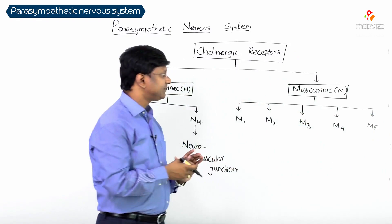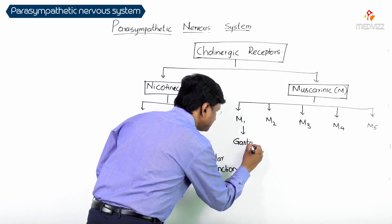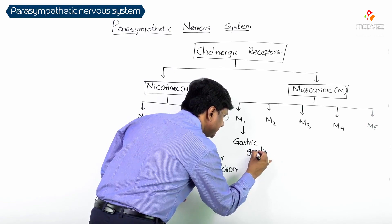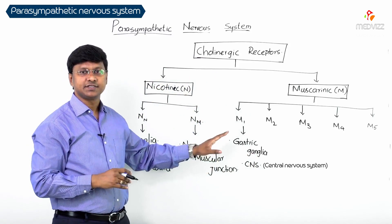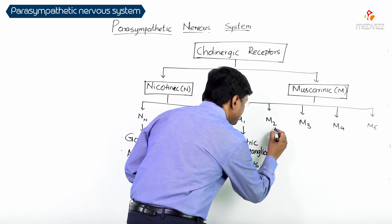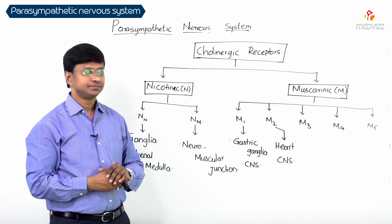M1 receptors are located in the gastric ganglia and also in the central nervous system. M2 receptors are present in the heart and also in the central nervous system.